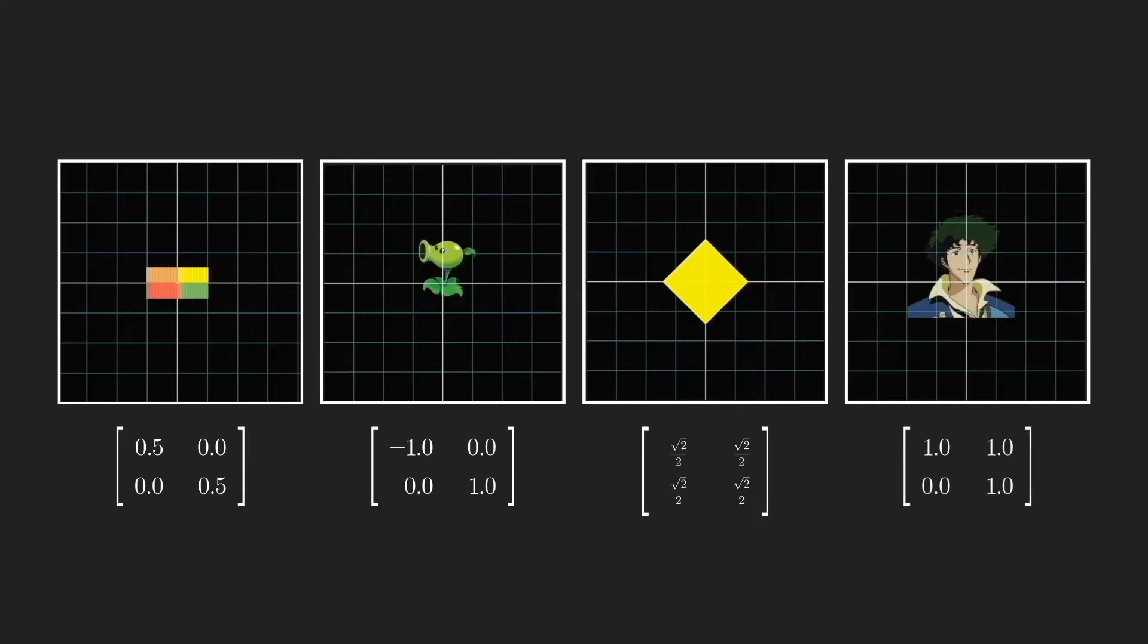But what if I don't like a particular transformation I had? Maybe it distorted my image a little bit. I just want every vector to go back where they originally came from. Is there one matrix that can untransform the previous transformation for me?